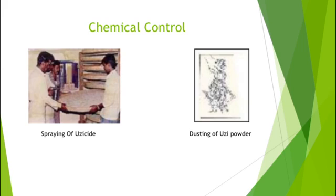Another way to control the infestation is by chemical control. In this method, we can spray Uzi-cide or Uzi powder to kill the Uzi eggs on the silkworm body, or we can spray 2% bleaching powder solution on the body of the silkworm larvae to detach or kill the Uzi eggs.